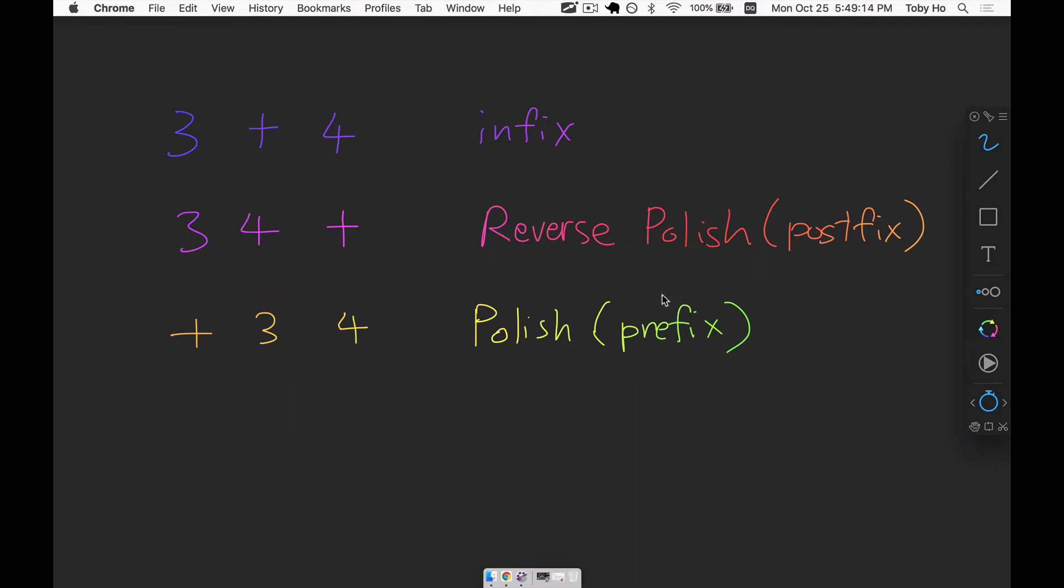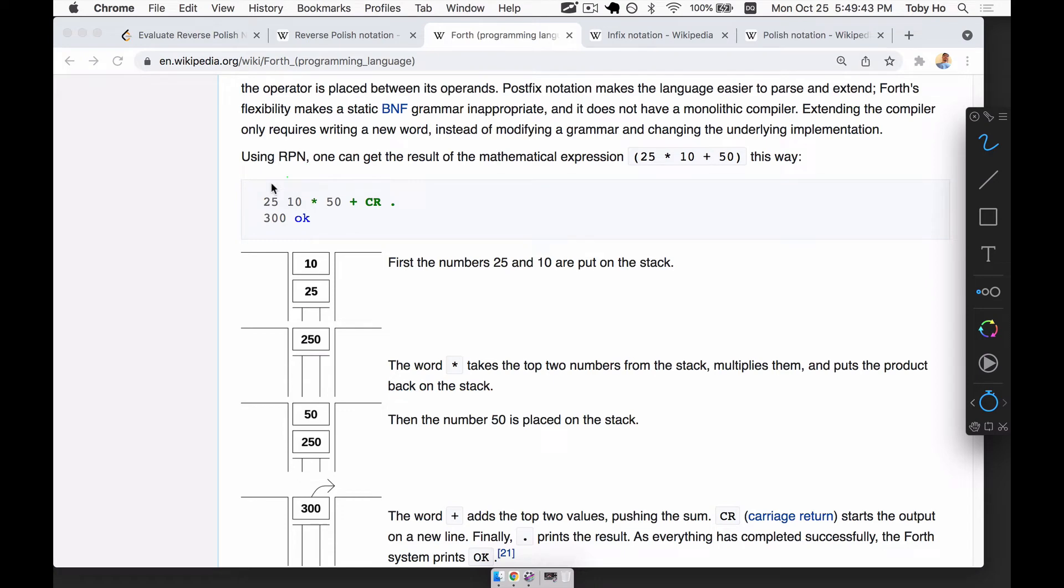And the reverse Polish notation is notably used in the fourth programming language. So this is some fourth code. And this line means, take the numbers 25 and 10, and multiply them together. And then take the result, and add it to 50. And then print it, and put the carriage return after it. That's a line of fourth code.